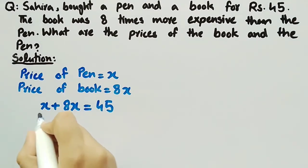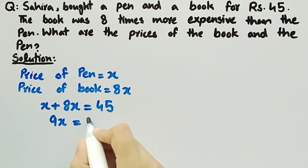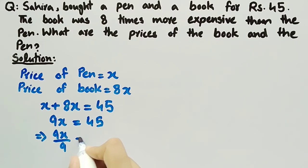8x plus x is equal to 9x and it is equal to 45. Now dividing both sides by 9, we get 9x divided by 9 equal to 45 divided by 9. This 9 will be cancelled out by this one.